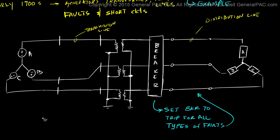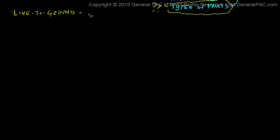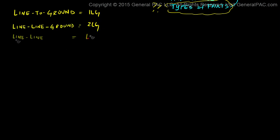As a power systems engineer, we are asked to set the circuit breaker so it trips for all types of faults on the distribution line feeding our load. We are given our system parameters, like line impedance. The question comes up: what does 'all types of faults' mean? In the power system, there can exist a line-to-ground fault, a two-line-to-ground fault, a line-to-line fault, and lastly, a three-phase fault.